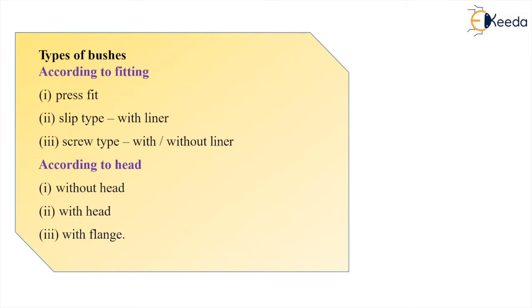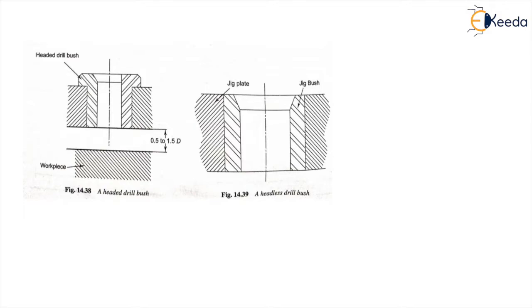Looking at the types of bushes, there are press fit, slip type with liners, and screw type with or without liners. According to the head, we have without head, with head or with flanges. Here I have shown the typical headed drill bush and the headless bush — this one has a head and this one does not. This is the jig plate and this is our jig bush.